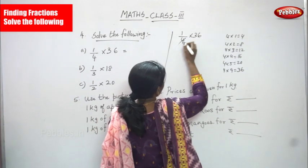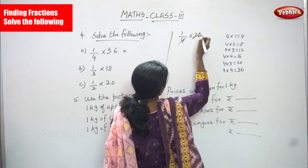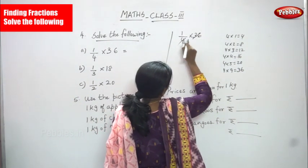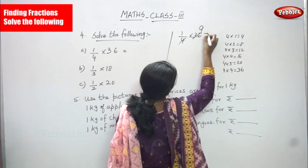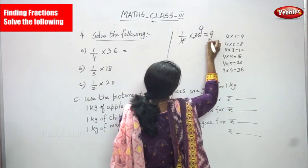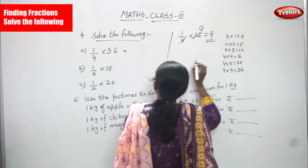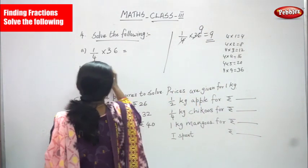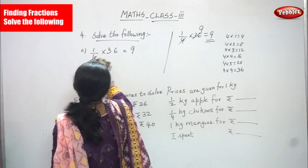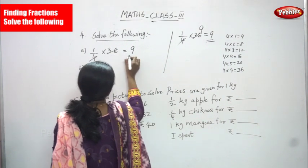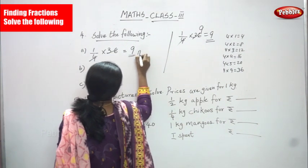So 36 is going to be cancelled by 4, and you get 9. 1 × 9 = 9. So 9 is the right answer for this question.